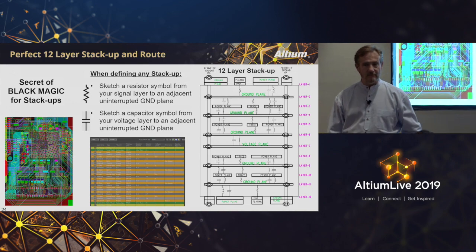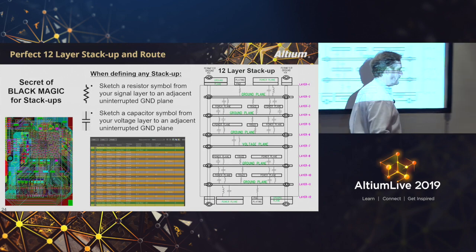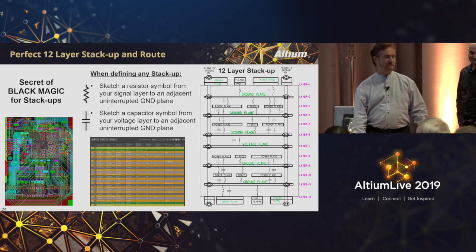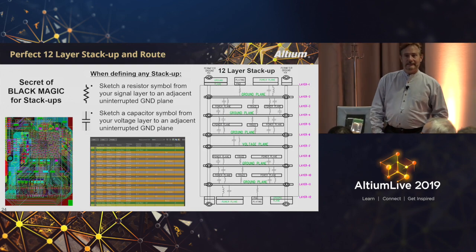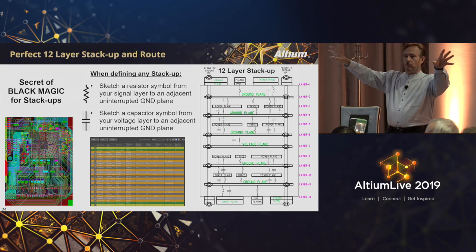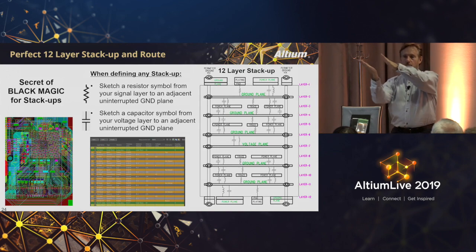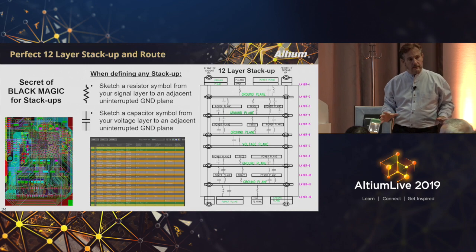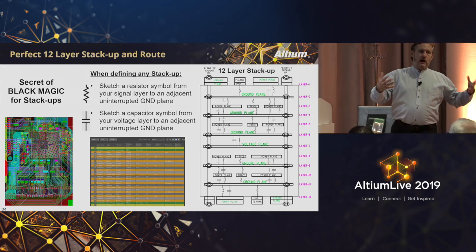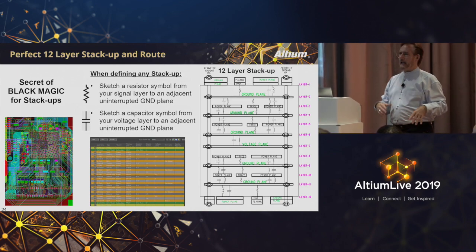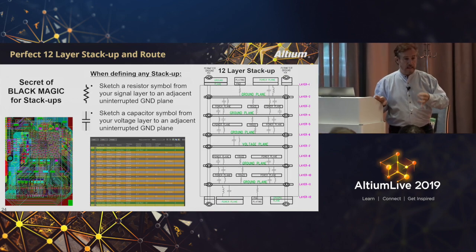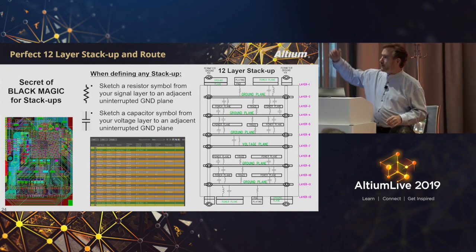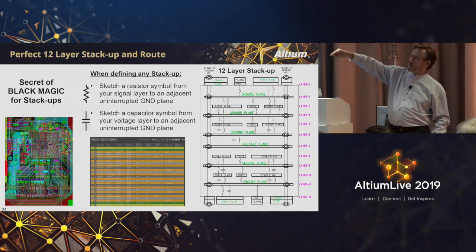For a 1 mm pitch BGA with 8 rows, you need 4 signal layers. Then add a ground plane for every signal layer and you've got an 8-layer board. That's my base point. If I route every signal out with two traces between pads and a ground plane underneath, I'm solving signal integrity by giving an immediate uninterrupted ground return path. We still need to talk about power delivery which may add more layers - I think it does - but that's a starting point. I always sketch it out: a line for signal, a long dash for a plane. Every time I want a power layer I make sure I can draw a capacitor to an uninterrupted ground plane.